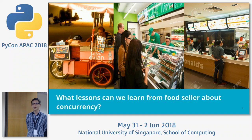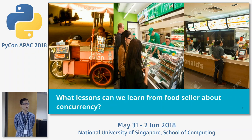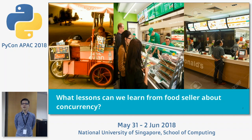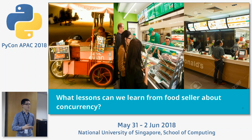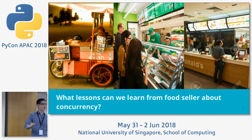If you look at the picture here there are three types of food seller. The first one on the very left is the ice cream uncle. Those of you who are new to Singapore, you can find them along Orchard Road. They usually work alone — they receive the order, prepare the ice cream, and give it to the customers. There is no concurrency model here; it's just a sequential operation.